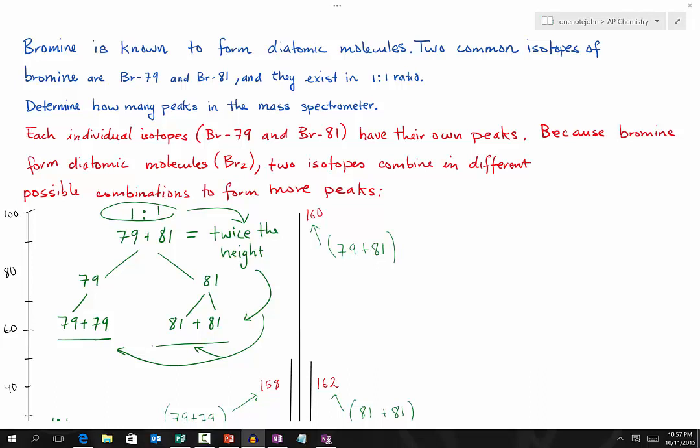Two common isotopes of bromine are Br-79 and Br-81, and they exist in a 1 to 1 ratio. That means half is bromine-79 and half is bromine-81.